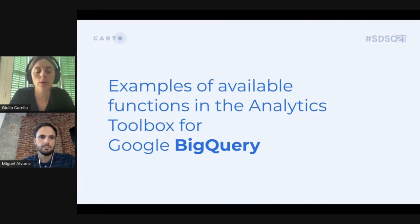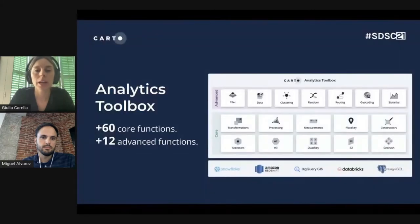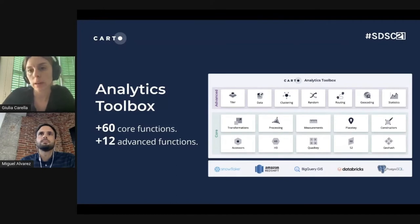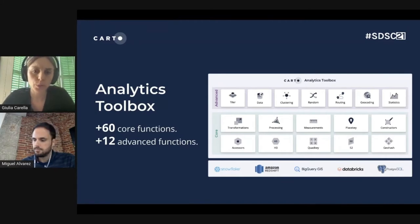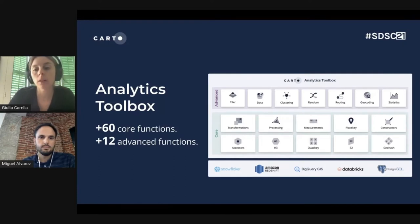In this workshop, we will focus on the use of our analytics toolbox, which is a set of functions and procedures for performing spatial analytics at scale on top of Google Cloud BigQuery. The analytics toolbox includes several modules for different categories. We have core functions that are open to everyone — you only need a Google BigQuery account — and a set of advanced functions available only to Carto users. Although this workshop focuses on BigQuery, we are developing these functions also for other leading cloud data warehouses such as Snowflake, Amazon Redshift, Databricks, and PostgreSQL.